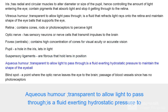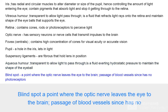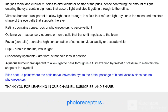The aqueous humor is transparent to allow light to pass through; it is a fluid exerting hydrostatic pressure to maintain the shape of the eyeball. The blind spot is a point where the optic nerve leaves the eye to the brain and where blood vessels pass; it has no photoreceptors.